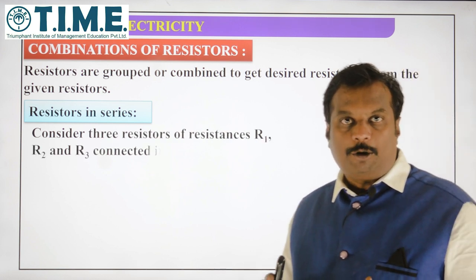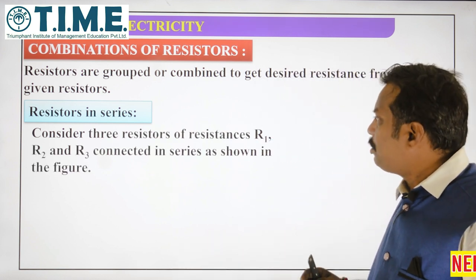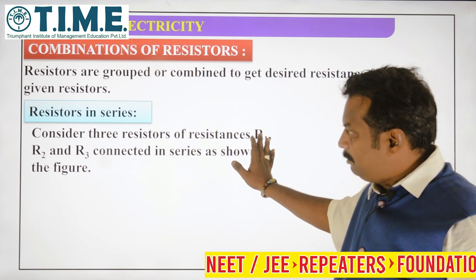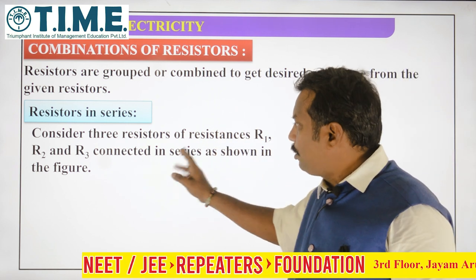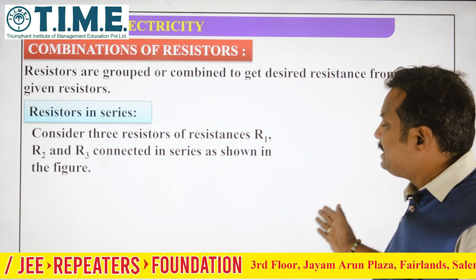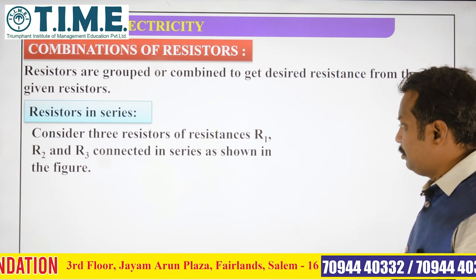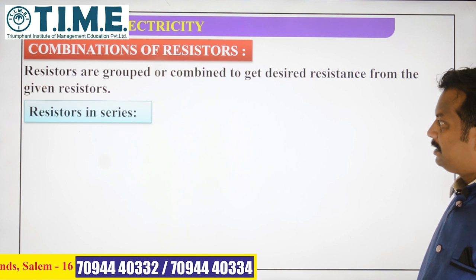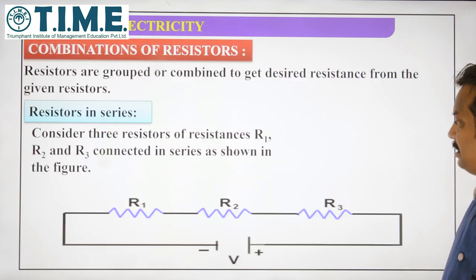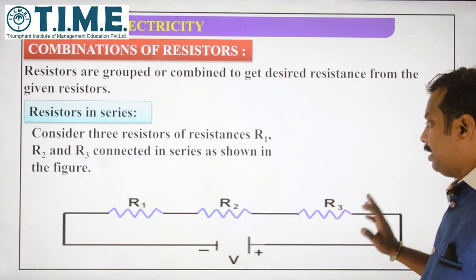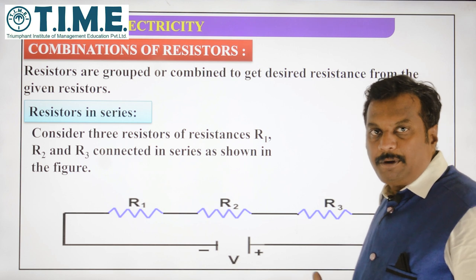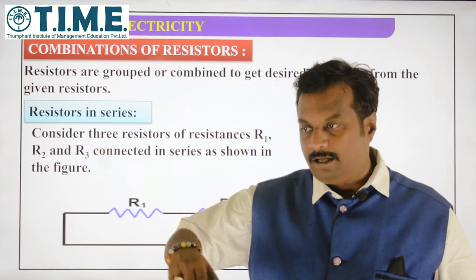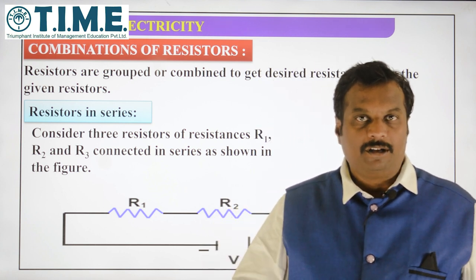We are just going to see what is series combination. Let us consider three resistors with values R1, R2, and R3. This is how they are connected — R1, R2, R3 in series. This is how you connect them, and the resistance is shown in the diagram.